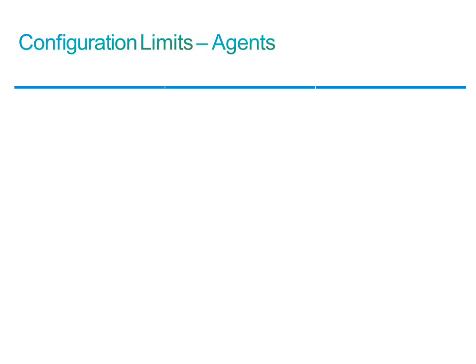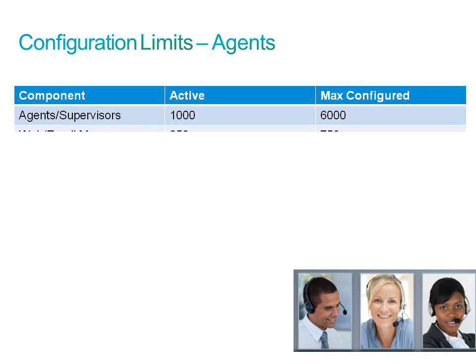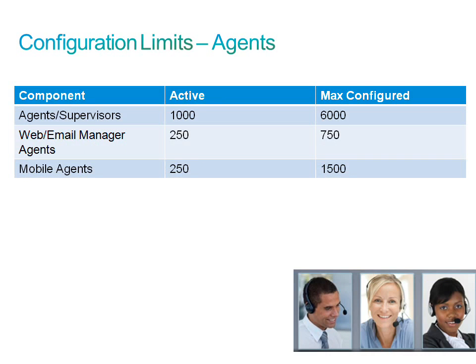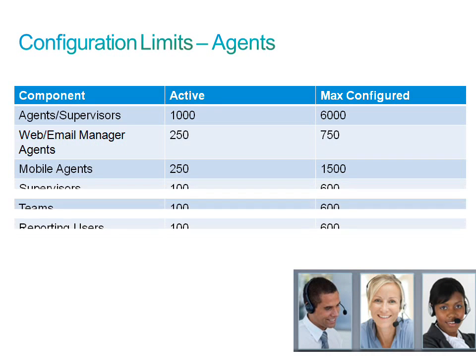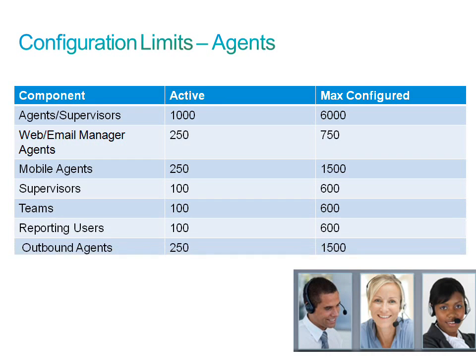Looking at agent, supervisor, and team limits: a maximum of 6,000 agents and supervisors may be configured, but only 1,000 of these may be active. 750 web email manager agents may be configured, but only 250 can be active. 1,500 mobile agents may be configured, but only 250 may be active. 600 supervisors, teams, and reporting users may be configured, but only 100 may be active. And 1,500 outbound agents may be configured, but only 250 active.